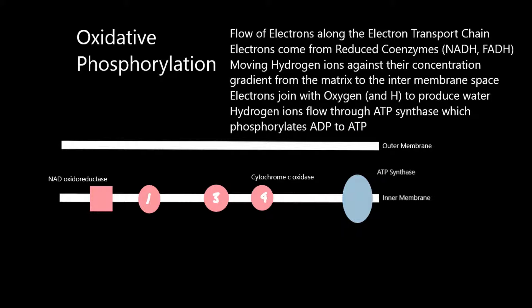So we start with NAD oxidoreductase. This accepts the two hydrogens and two electrons. Two electrons from NADH get passed on to the first complex, and that moves hydrogen ions across the membrane.